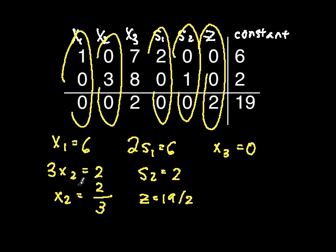You would interpret these results by saying that the system is maximized at z equals 19 halves when x sub 1 equals 6, x sub 2 equals 2 thirds, s sub 1 equals 2, s sub 2 equals 2, and x sub 3 equals 0. Thank you.